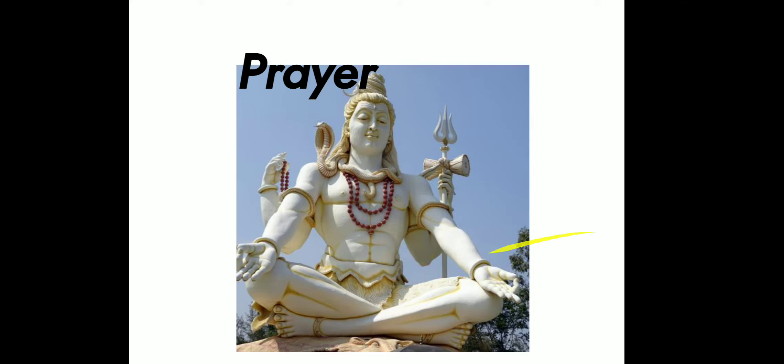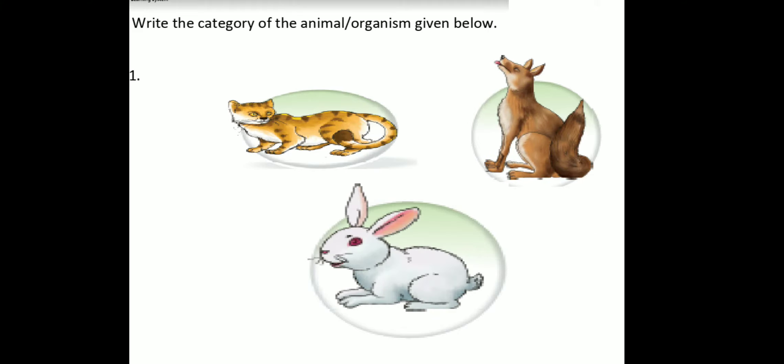Children, now we are going to recall the previous session. Let's revise first. Write the category of the animal or organism given below. First one is an omnivore. Children, can you guess the category of this animal? Fox is a carnivore. Children, see the next picture. Can you decide the category of this animal? Rabbit is a herbivore.